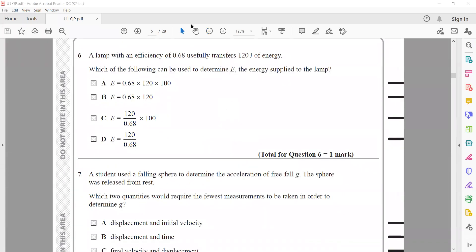A lamp has an efficiency of 0.68 and useful energy is 120 joules. The formula for efficiency equals useful energy output divided by total energy input times 100. Because it's 0.68, the percentage is converted to decimal, so 0.68 equals 120 divided by input. Input equals 120 divided by 0.68, so the right answer is D.